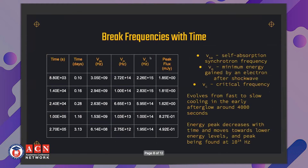The break frequencies with time are presented in the table on the left, where ν_SA is the self-absorption synchrotron frequency, ν_m is the minimum energy frequency gained by an electron after a shock wave, and ν_c is the critical frequency of the electron. We found that the system evolves from fast to slow cooling in the early afterglow around 4000 seconds, and the energy peak decreases with time and moves toward lower energy levels, with the peak found at 10^14 Hz.